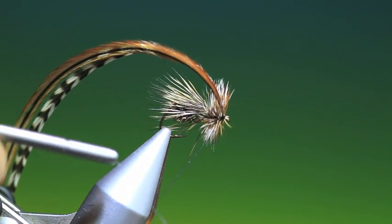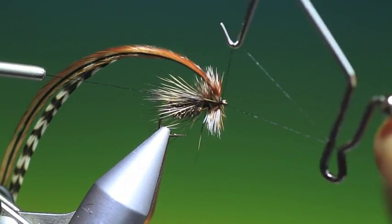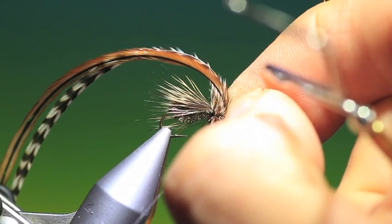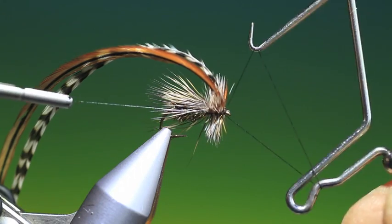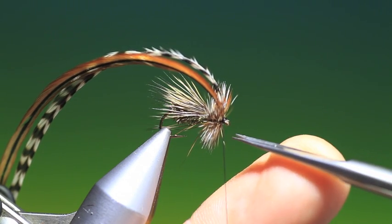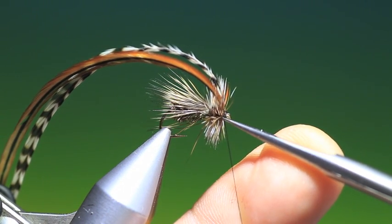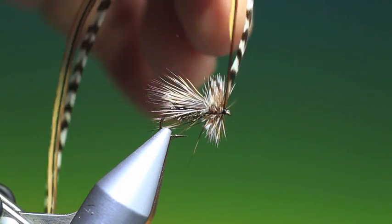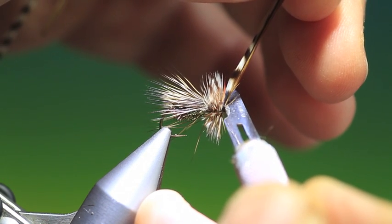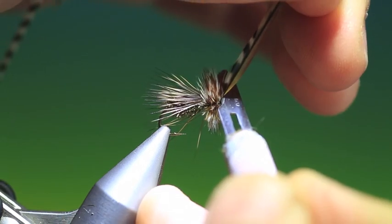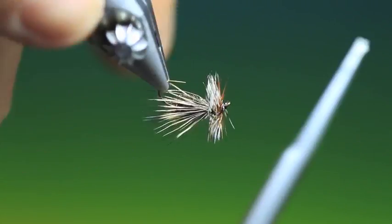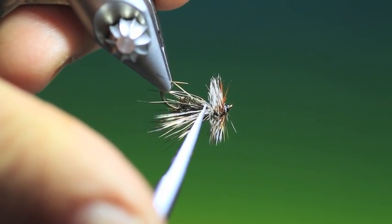Whip finisher. Let's give it one more. Remove the tying thread. And when I'm doing two hackles like this I like to use a sharp blade just at the base of the hackles. Like so. A little bit pulled down on the other side we'll just get rid of that.